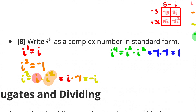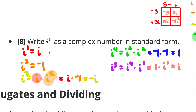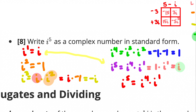Continuing the pattern: i⁵ = i⁴ · i¹ = 1 · i = i. So i⁵ equals i, the same as i¹. The pattern repeats every 4: i, -1, -i, 1, then i again. An easy way to do this: break i⁵ into i⁴ · i¹. Since i⁴ = 1, the answer is just i.